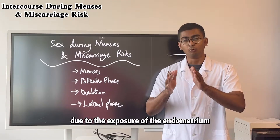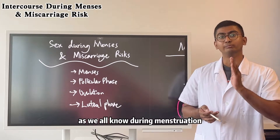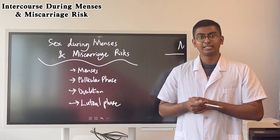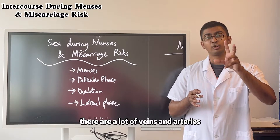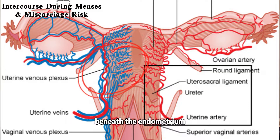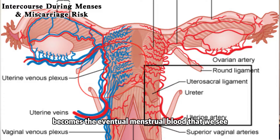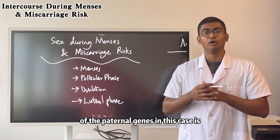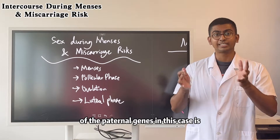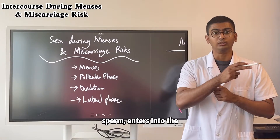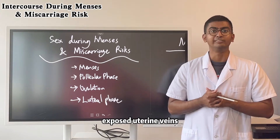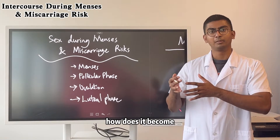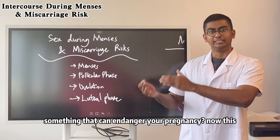Because of the intercourse during menstruation previously, due to the exposure of the endometrium — as we all know, during menstruation there is shedding of the inner lining of the uterus. During this process, there are a lot of veins and arteries beneath the endometrium that are exposed. That's what becomes the eventual menstrual blood that we see. So during this process, if any of the paternal genes — in this case, sperm — enters into the exposed uterine veins, it can very easily enter into the mother's circulatory system.